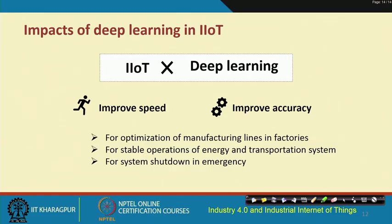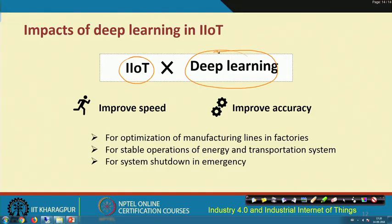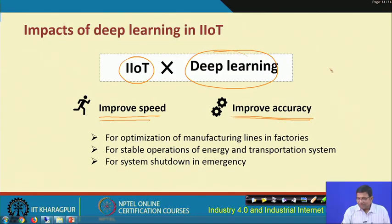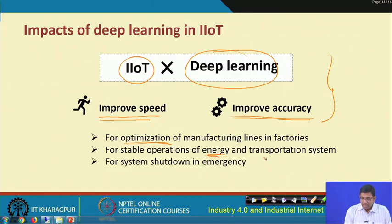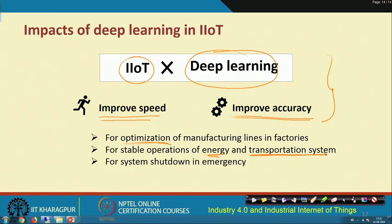We have IIoT and we have deep learning — both are very powerful technologies. IIoT is helpful for improving speed whereas deep learning is useful for improving accuracy. If you put them together, you get a multiplicative effect. This multiplicative effect is very powerful and can help manufacturing industries in factories to optimize their product lines, optimize energy consumption, improve transportation operations, and help with system shutdown in case of any emergency.